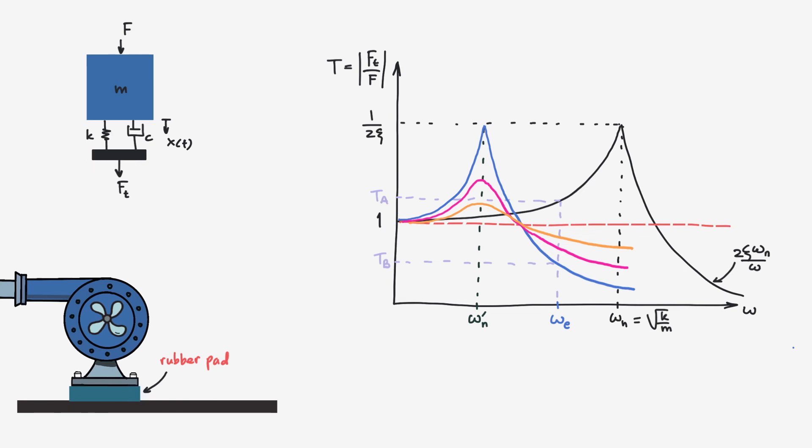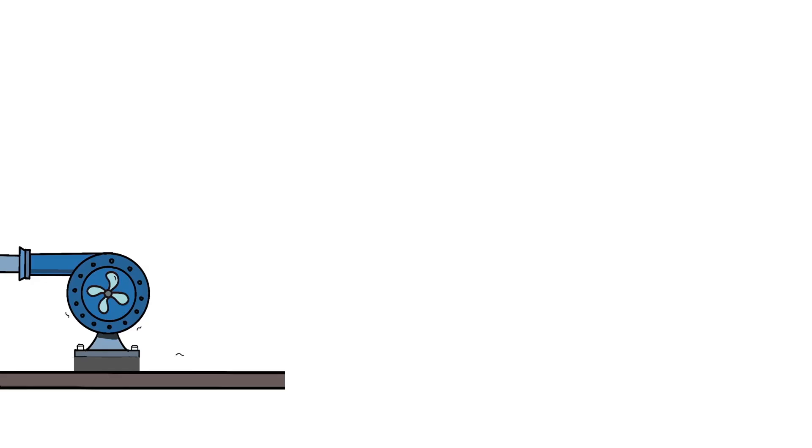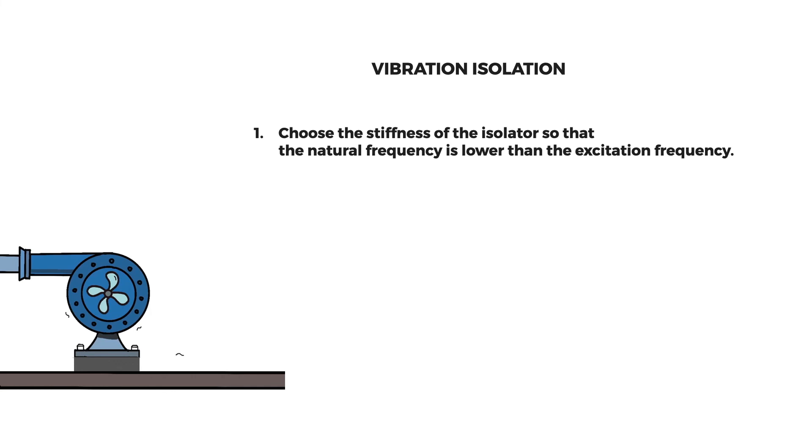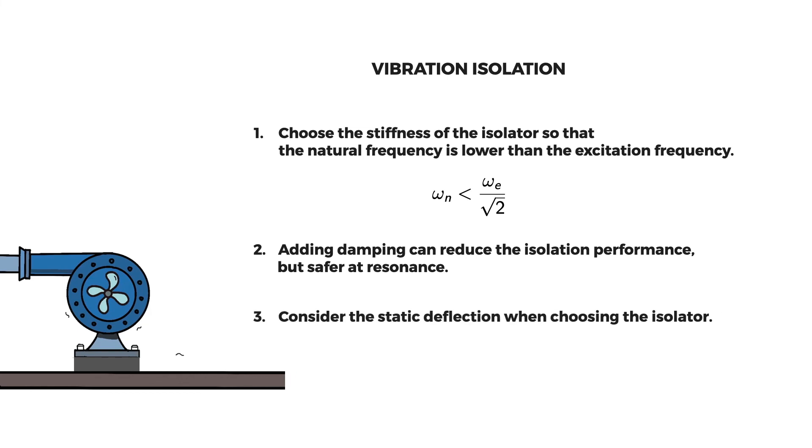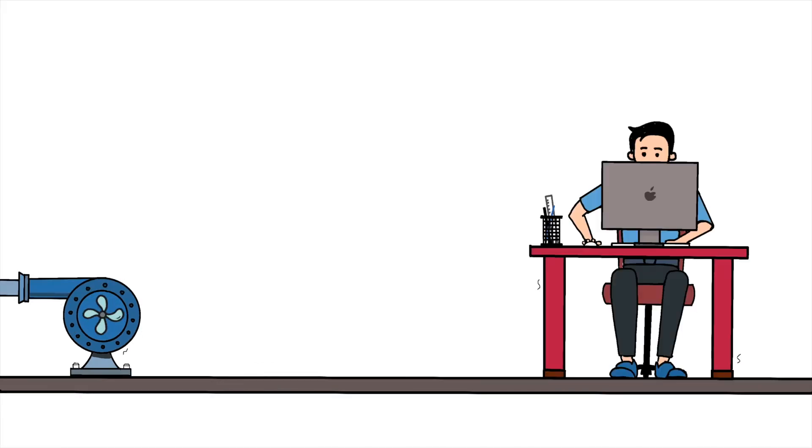As a conclusion on designing the vibration isolation: First, choose the stiffness of the isolator so that the natural frequency is lower than the excitation frequency. To be exact, omega n should be lower than the excitation frequency over square root of two. Second, adding damping can reduce the isolation performance but is safer at resonance. Third, consider the static deflection when choosing the isolator.